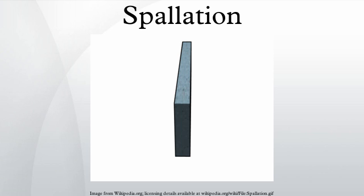It commonly occurs on mine shaft walls. In the context of anthropology, spallation is a process used to make stone tools such as arrowheads by knapping.